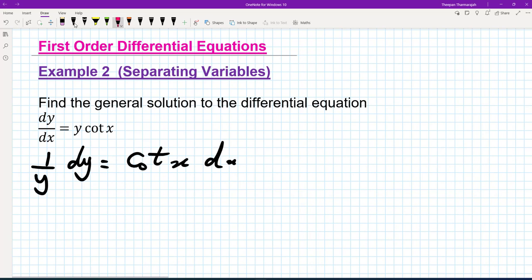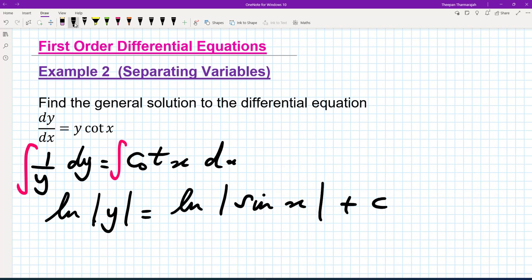And what we want to do is to integrate both sides of the equation. So we know that the integral of 1 over y is ln mod y. And we know that the integration of cot is ln sine of x plus the arbitrary constant.